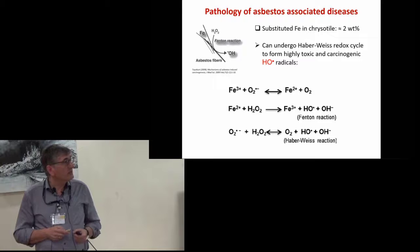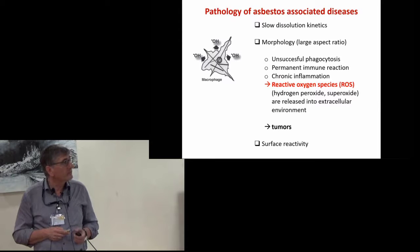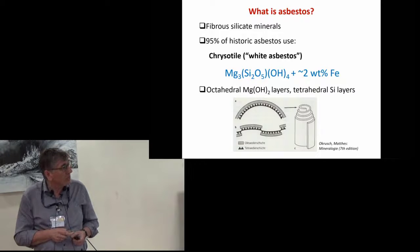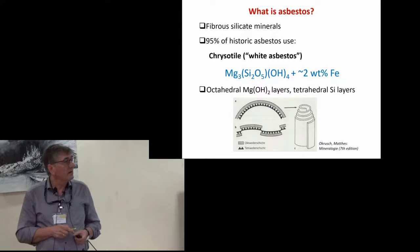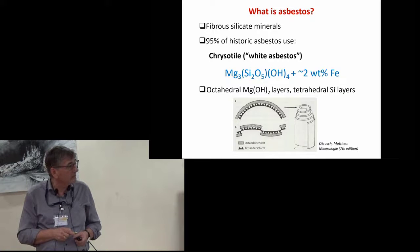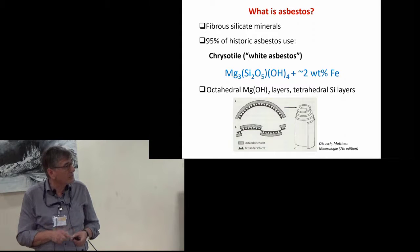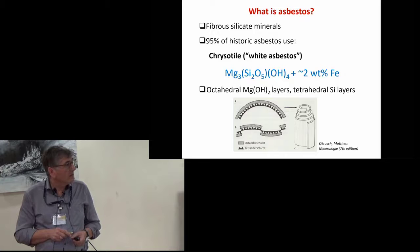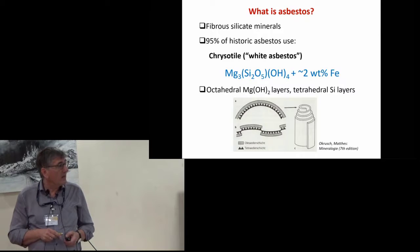Asbestos is a commercial term for six different silicate minerals. 95% of the historically used one is chrysotile with this chemical formula. It consists of alternating layers of octahedral magnesium hydroxide and tetrahedral silicon sites which are bundled up to such fiber, with the outermost layer being octahedral magnesium hydroxide.